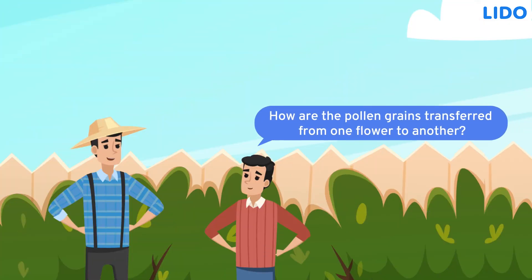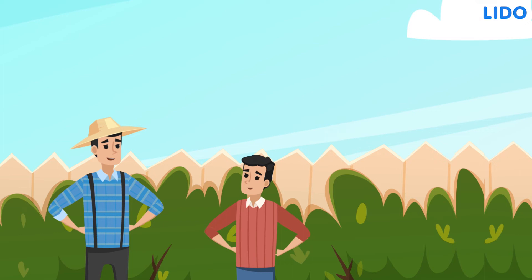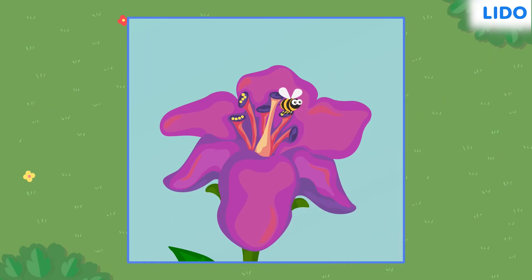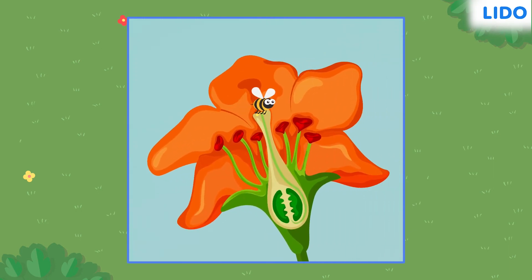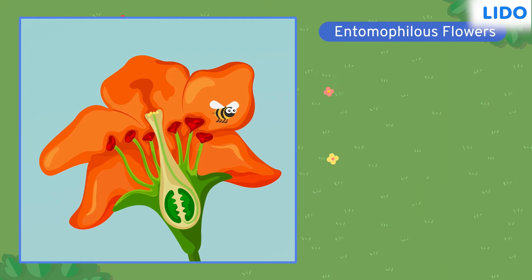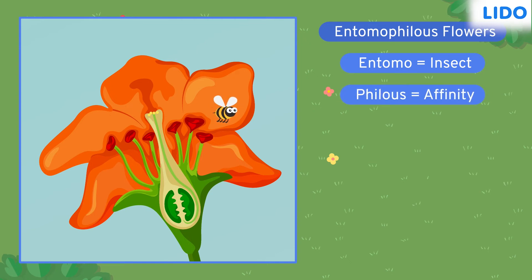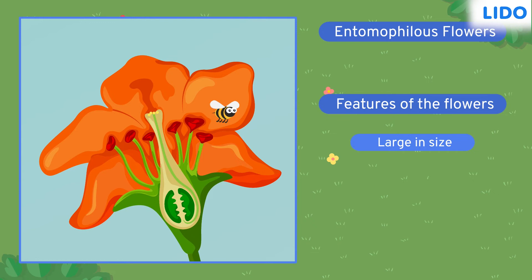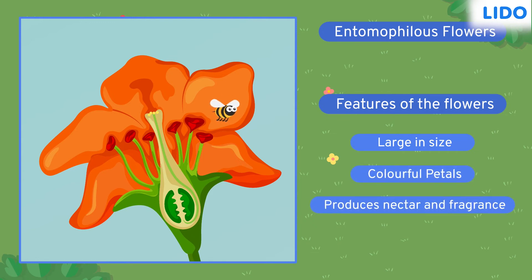Roshan asked, 'How are the pollen grains transferred from one flower to another? Do they have wings?' His father explained that pollen can transfer through different agents like the bee. When a bee collects nectar, pollen grains get attached to the bee. When the bee goes to the next flower, the pollen grains get attached to the stigma. These flowers are called entomophilous flowers, because 'entomo' means insects and 'philous' means affinity. These flowers usually have large, bright petals, a nice fragrance, and produce nectar to attract insects.